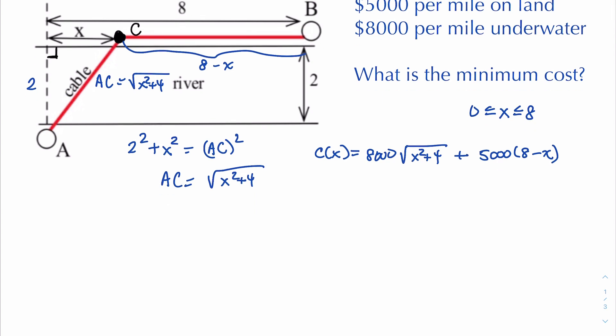Okay so ready to find the derivative and find the critical numbers and then off we go. So first thing I need to do before taking the derivative is to rewrite the square root because we know we deal better when it's a one-half power. So that means c of x is 8,000 times x squared plus 4 raised to the half, plus I'm going to go ahead and multiply the 5,000 through. So you have 40,000 minus 5,000x.